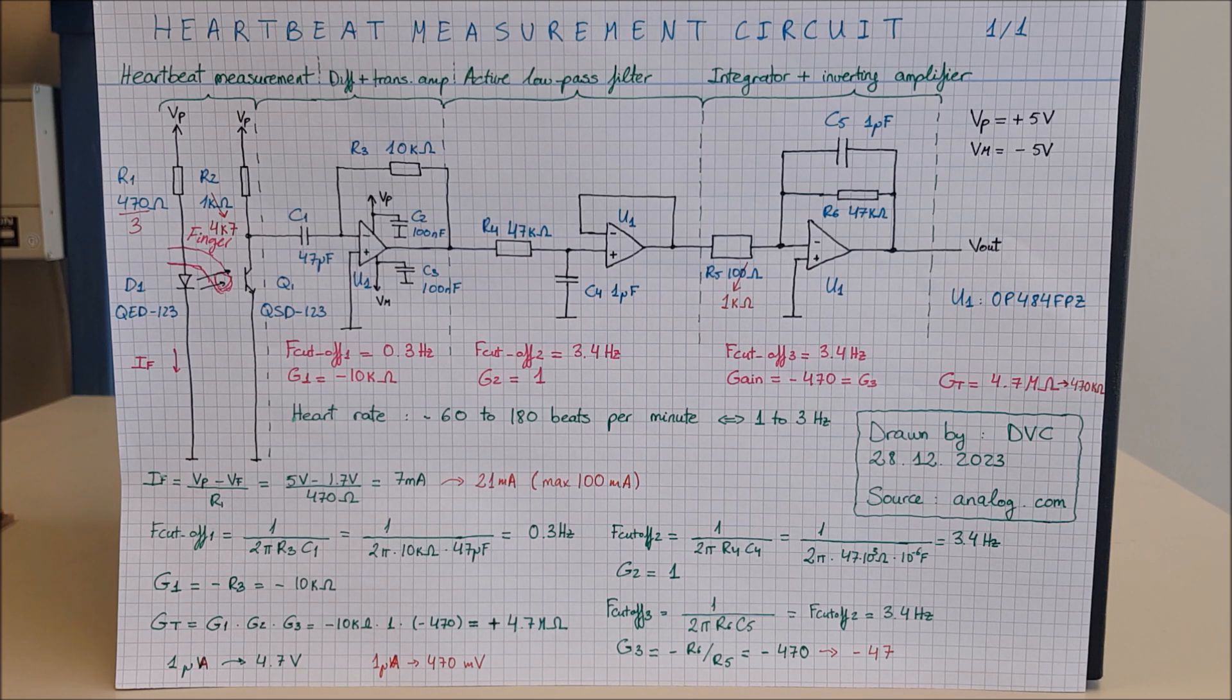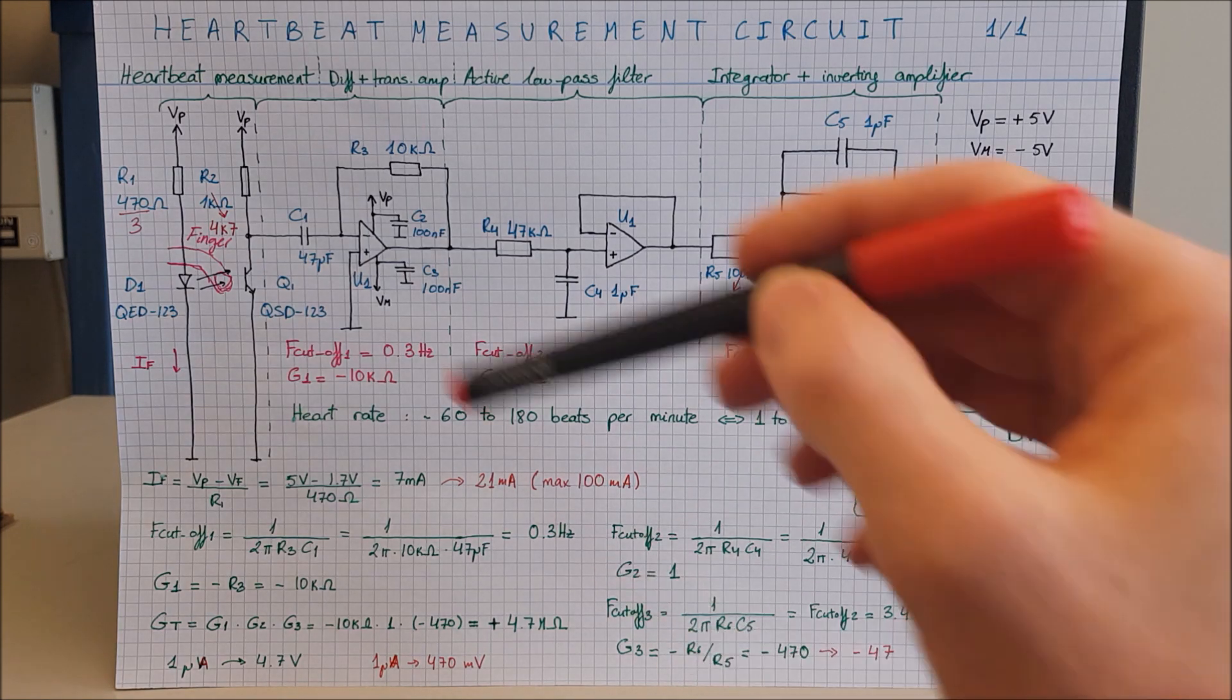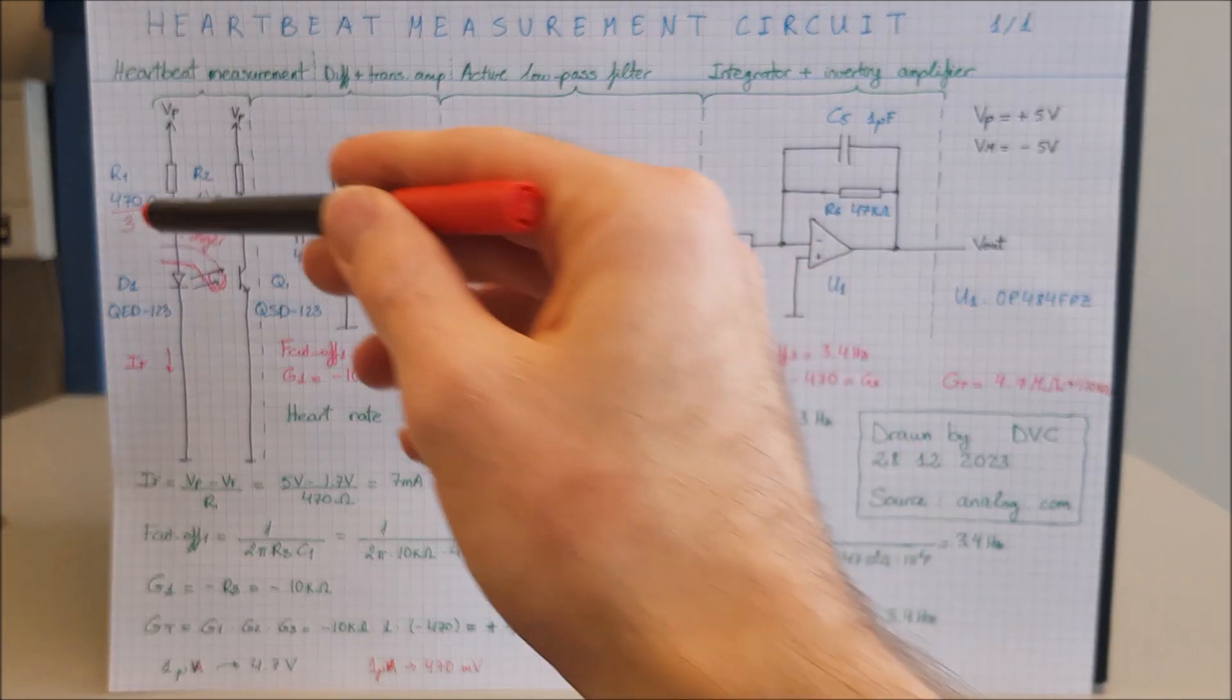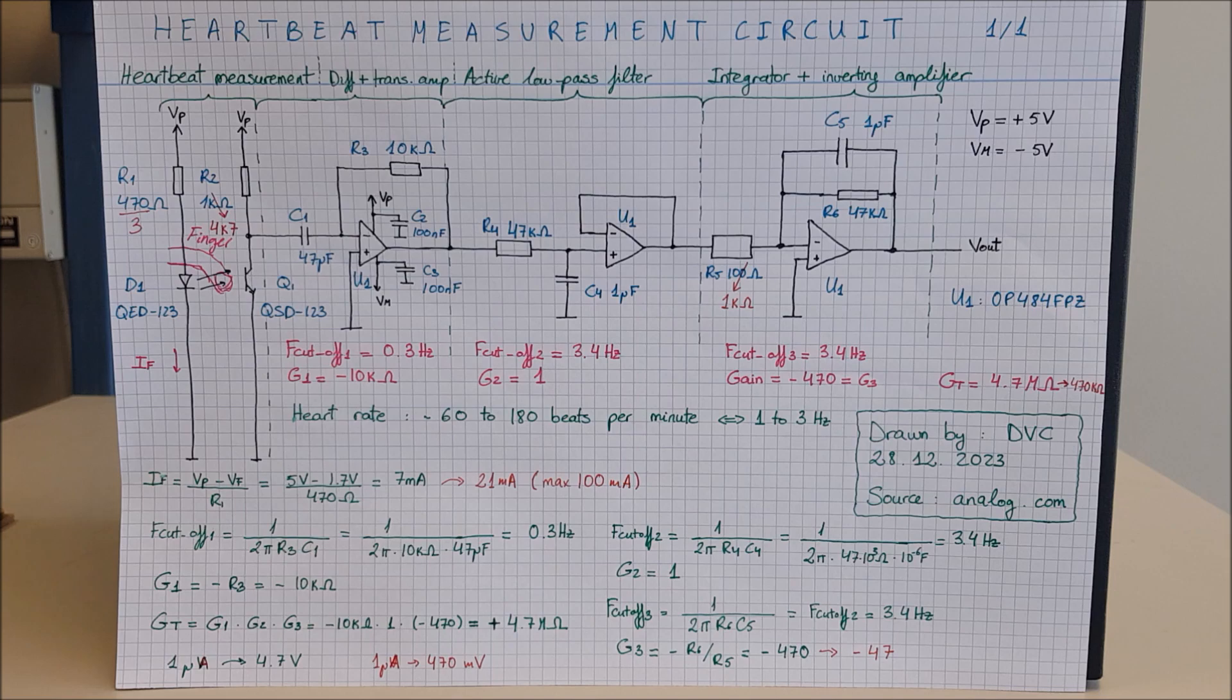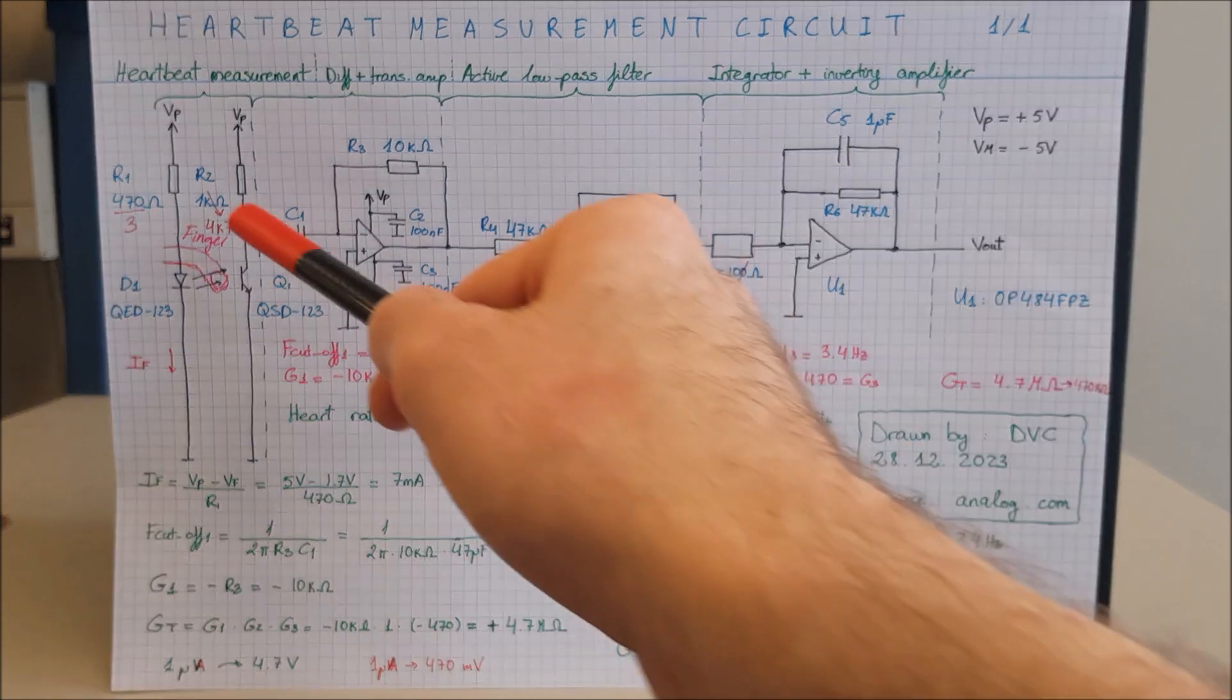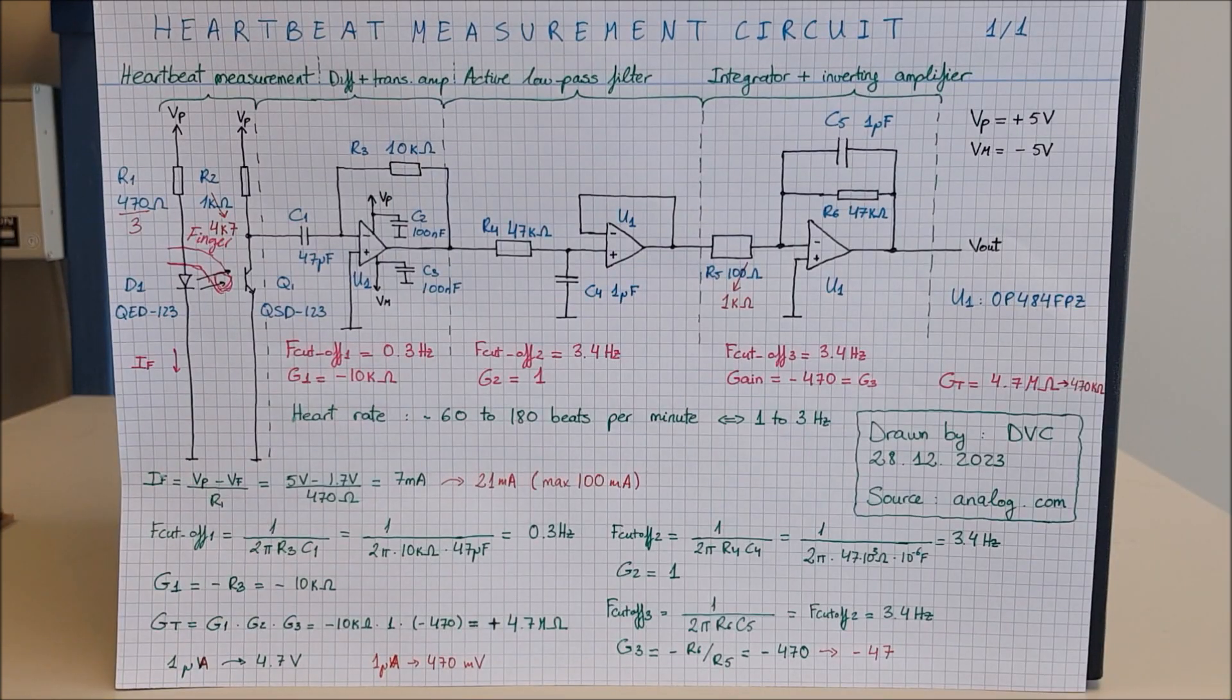I will discuss now the tweaks I have done to the circuit. I wanted more light shining from the LED, so I have connected three R1s in parallel. Therefore, the resistance is 470 divided by 3, which is 21 milliampere. That is okay, because the maximum that the LED can take is 100 milliampere. Next, to increase the sensitivity, I have increased the value of R2 to 4.7 kilo ohms.